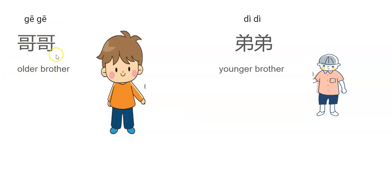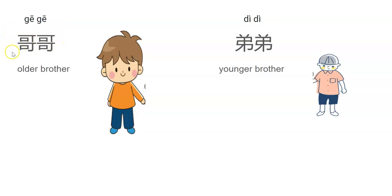Older brother: 哥哥 (gēgē). Younger brother: 弟弟 (dìdi). Now how to say 'my older brother'? 我的哥哥 (wǒdə gēgē). Now how to say 'my younger brother'? 我的弟弟 (wǒdə dìdi). Then how to say 'your older brother'? 你的哥哥 (nǐdə gēgē). Then how to say 'your younger brother'? 你的弟弟 (nǐdə dìdi). Then how to say 'his or her older brother'? 他的哥哥 (tādə gēgē).